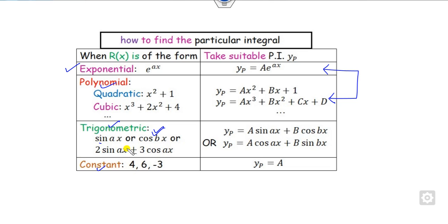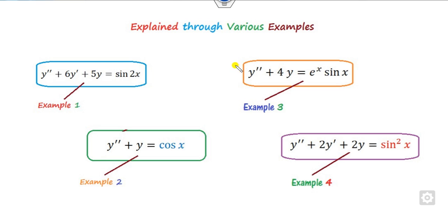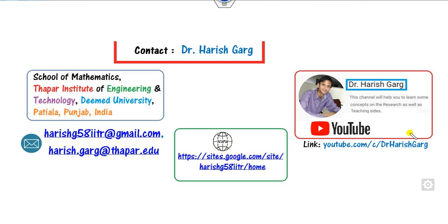Whenever there is a sine, cosine, sine squared and so on, we take yp as A sine + B cosine or A cosine + B sine, depending on the form. We will explain this with four examples in this video: sine of x, cos of x, sine of x with an exponential, and sine squared of x.